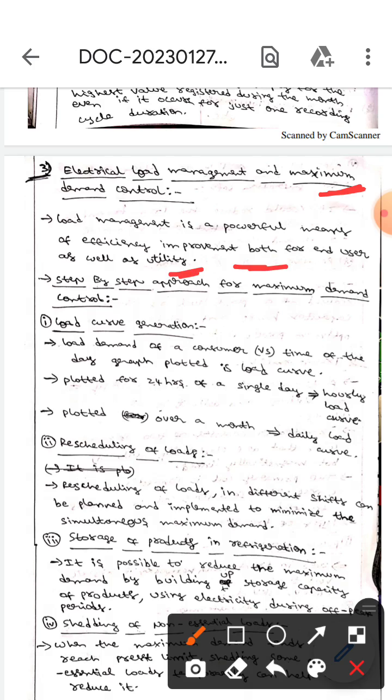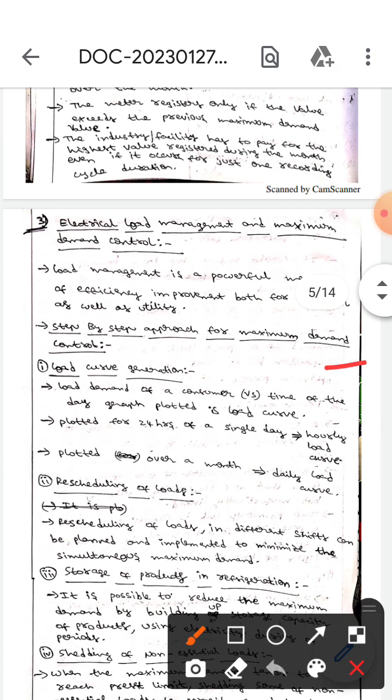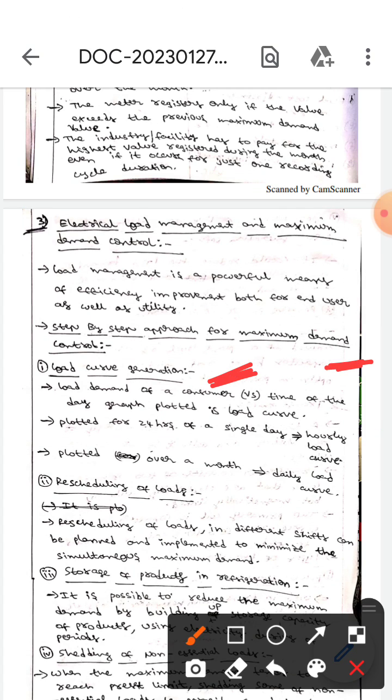Let's talk about the step-by-step approach for maximum demand control. The first one is load curve generation. Load demand of the consumer is the graph plotted between load demand of consumer and the time of the day.